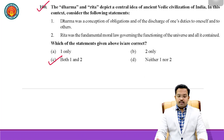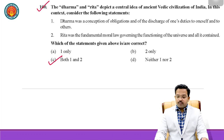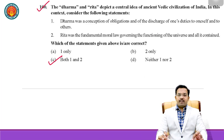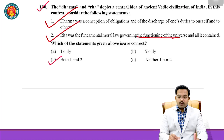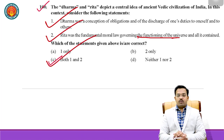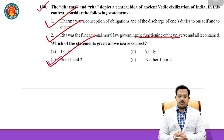Question 100: Dharma and Rita depict a central idea of ancient Vedic civilization in India. Dharma was a conception of obligations and the discharge of one's duties to oneself and to others — correct, even without having read additional context. Rita was the fundamental moral law governing the functioning of the universe and all it contained — a universal and behavioral governing principle. Both statements are correct, so the correct answer is both one and two.